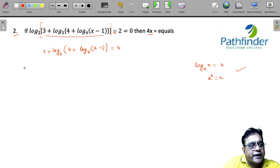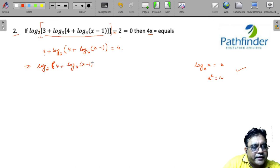So taking 3 to the other side, we have log base 3 of (4 + log base 4 of (x - 1)) equals minus 1. So when do you get this as equal to minus 1?